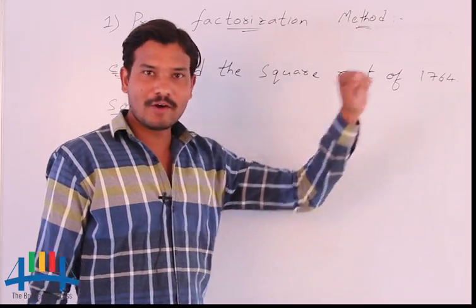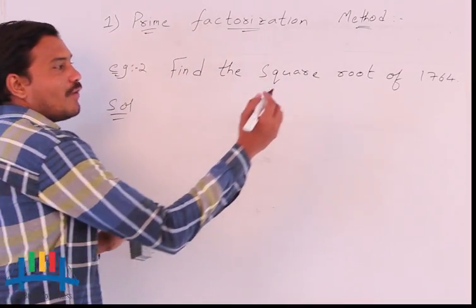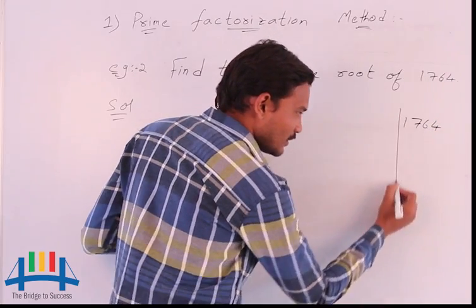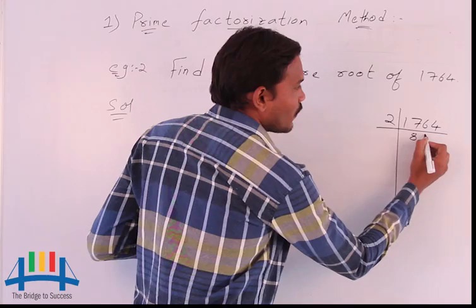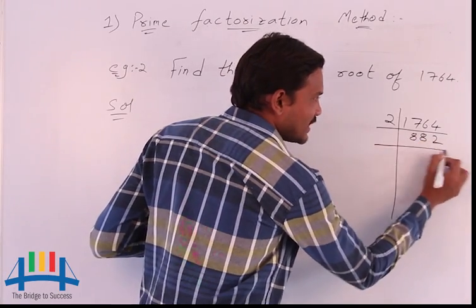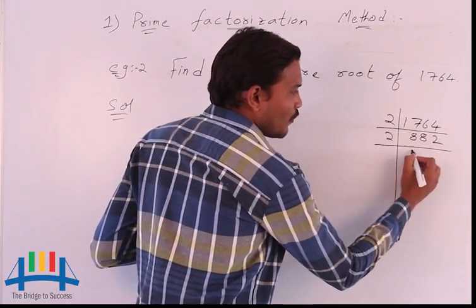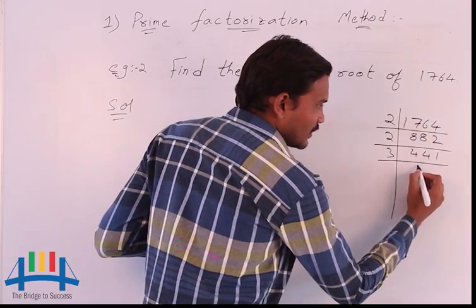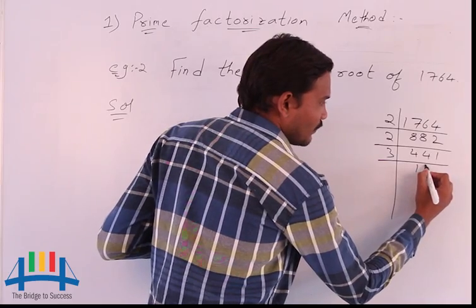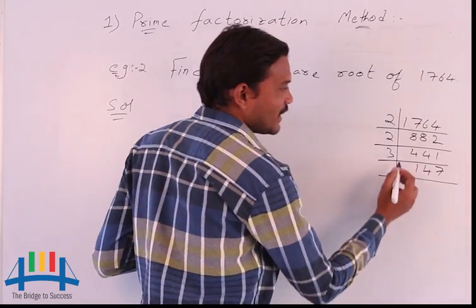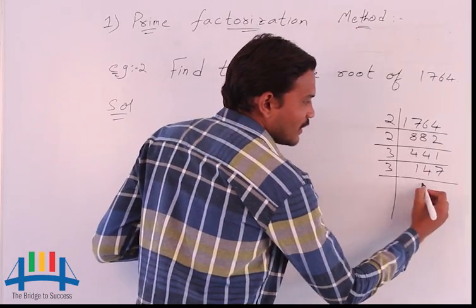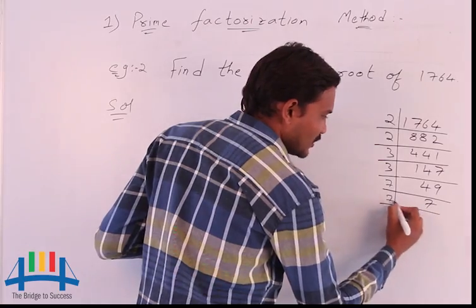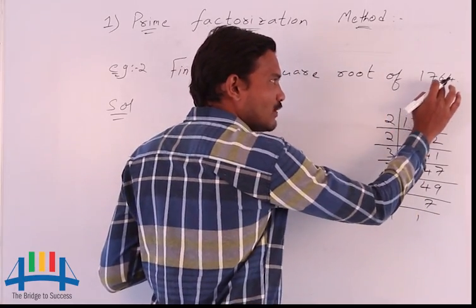This is a 4-digit number. We have to find the prime factors of this number. Taking the LCM: 2 times 882 is 1764, 2 times 441 is 882, 3 times 147 is 441, 3 times 49 is 147, 7 times 7 is 49, and 1. So these are the prime factors of the given number 1764.